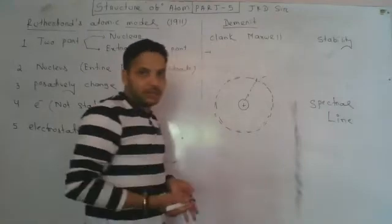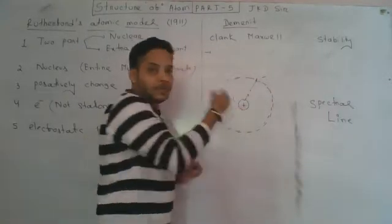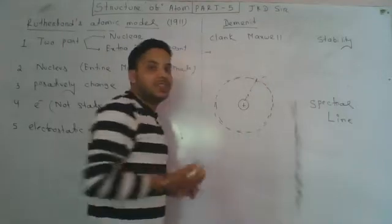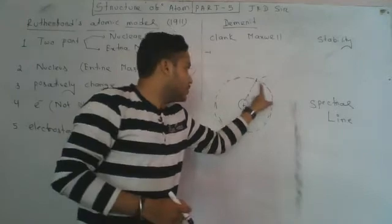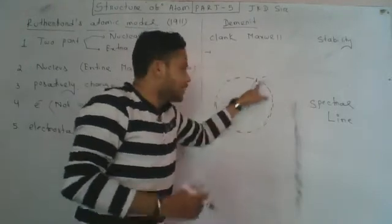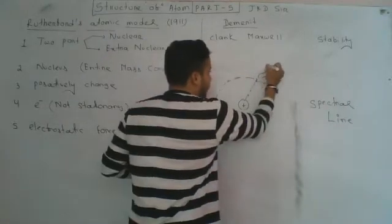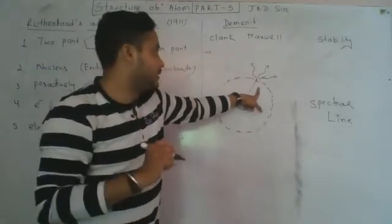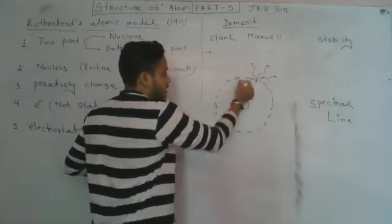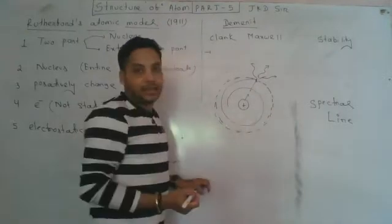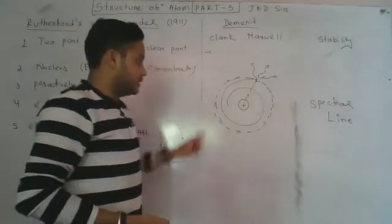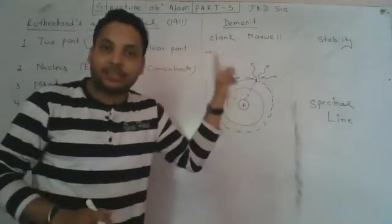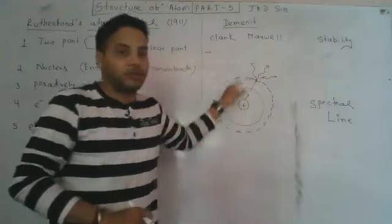If we have charged particles in continuous circular motion, according to classical electromagnetic theory — as described by Maxwell — a charged particle undergoing acceleration must continuously emit energy. So the electron would continuously lose energy as it orbits.